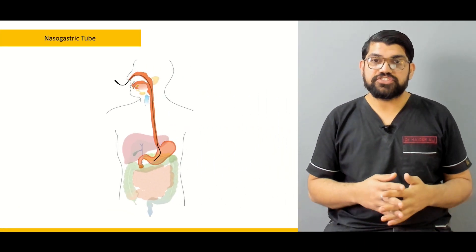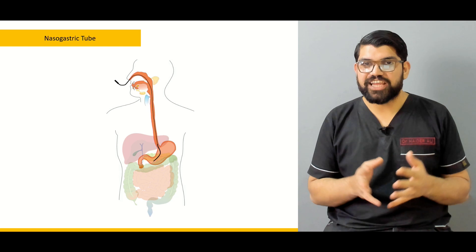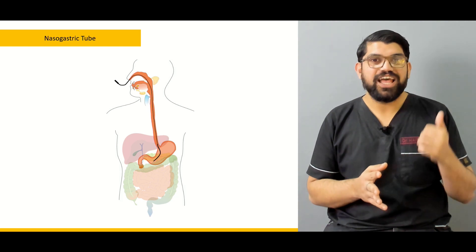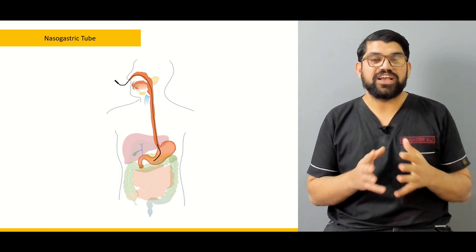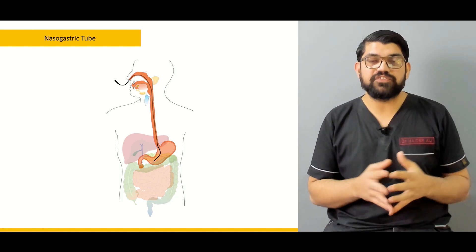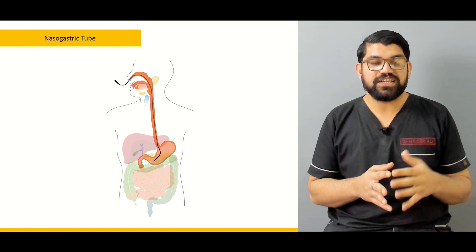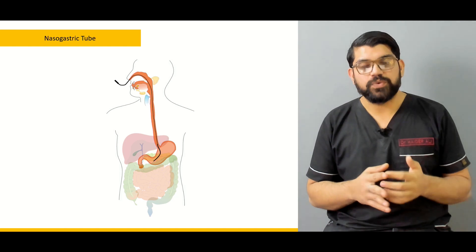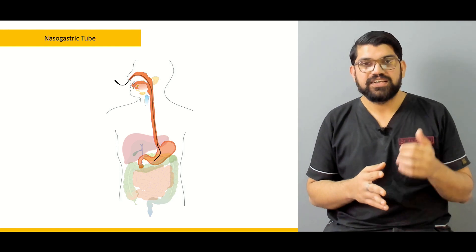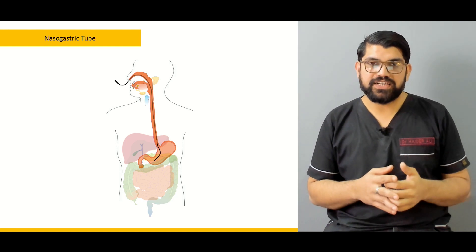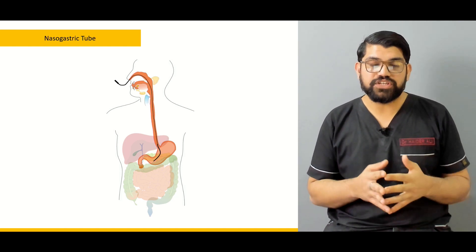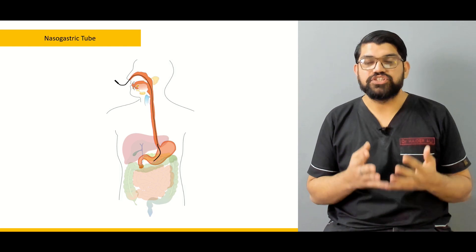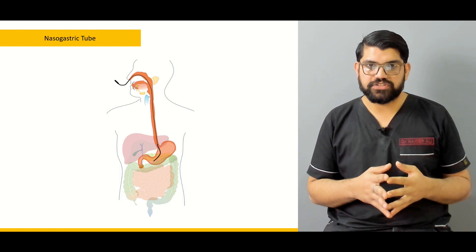The significance of the nasogastric tube, especially in patients with upper GI bleed who need to clear the field for endoscopists, and also to decompress abdominal contents that are distended due to constipation.